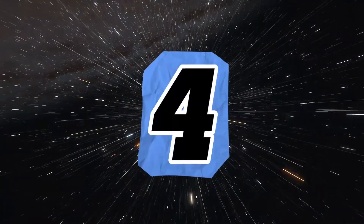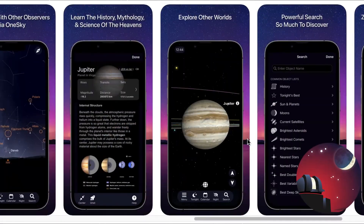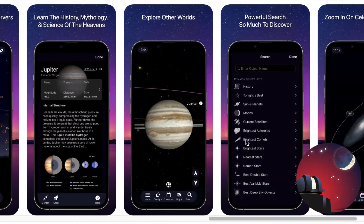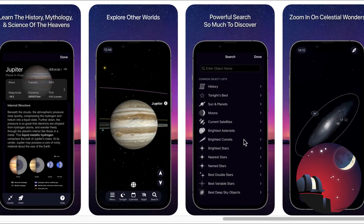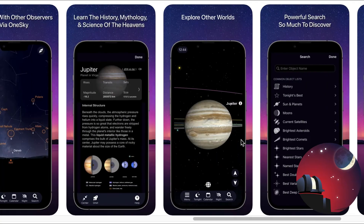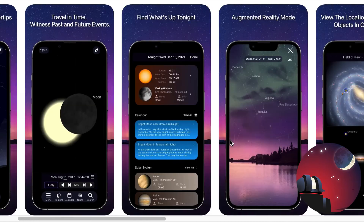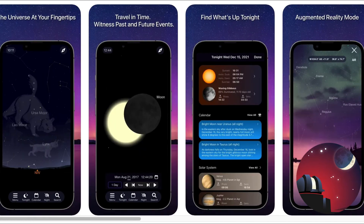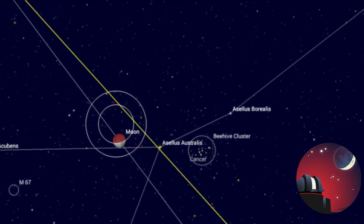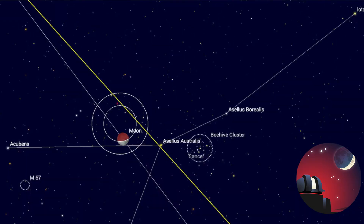Number 4: SkySafari 6. While the pro version offers more features, the free version of SkySafari 6 is still a great option for exploring the night sky, with information on stars, planets, constellations, and deep sky objects.